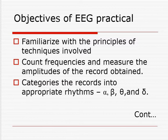The next objective is to count frequencies and measure the amplitude of the recorded signal. All the electrodes provide their own electrical signal as a waveform, and finally we get conclusions from the amplitude and frequencies to identify actual issues happening in the brain. EEG waves are classified into four types: alpha, beta, theta, and delta.